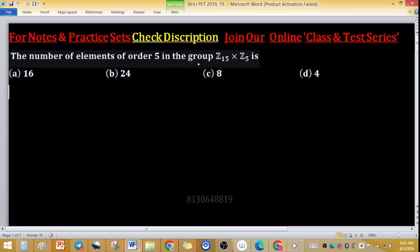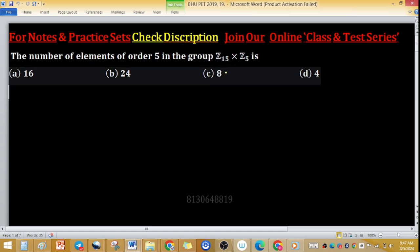The number of elements of order 5 in the group Z₁₅ × Z₅ - this is the direct product of groups. We are seeking the number of elements of order 5. So what is the meaning of order of an element?